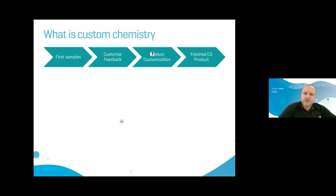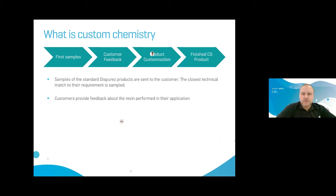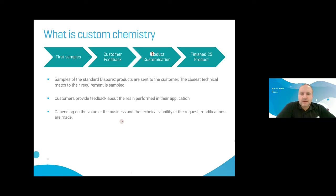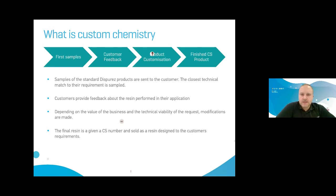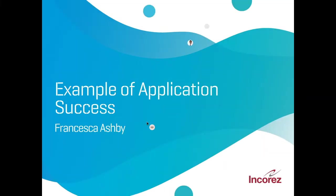What is custom chemistry? Samples of standard DisPres products are sent to the customer and the closest technical match to their requirement is sampled. Customers provide feedback about how the resin performed in their application. Depending on the value of the business and the technical viability of the request, modifications to the polymer are then made. The final resin is given a CS number and sold as a resin designed to the customer's requirement. Thank you for listening — I would like to hand over to Francesca to continue with examples of application success.